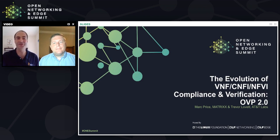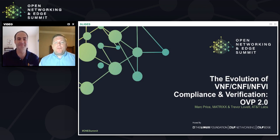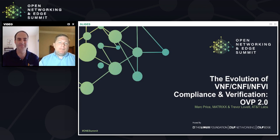I'm Trevor Lovett. I'm with AT&T, and I work in our network chief technology organization. We're tasked with making it easy to integrate and bring on new network functions into AT&T. We work both internally on automation and requirements for suppliers, but we also work heavily in the open source community — ONAP, CNTT, CNCF — all trying to drive making sure that AT&T's needs for running telco workloads are out in the community and shared, making it easy to ingest and offer services to our customers.